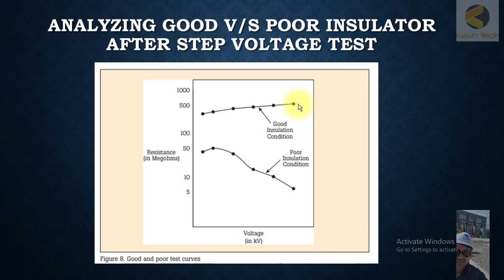As I have shown here, the resistance of good equipment when plotted against kVs will remain quite constant. But equipment whose insulation is poor will show the insulation level decreasing very sharply as the voltage increases. This is a very good method to get the results.